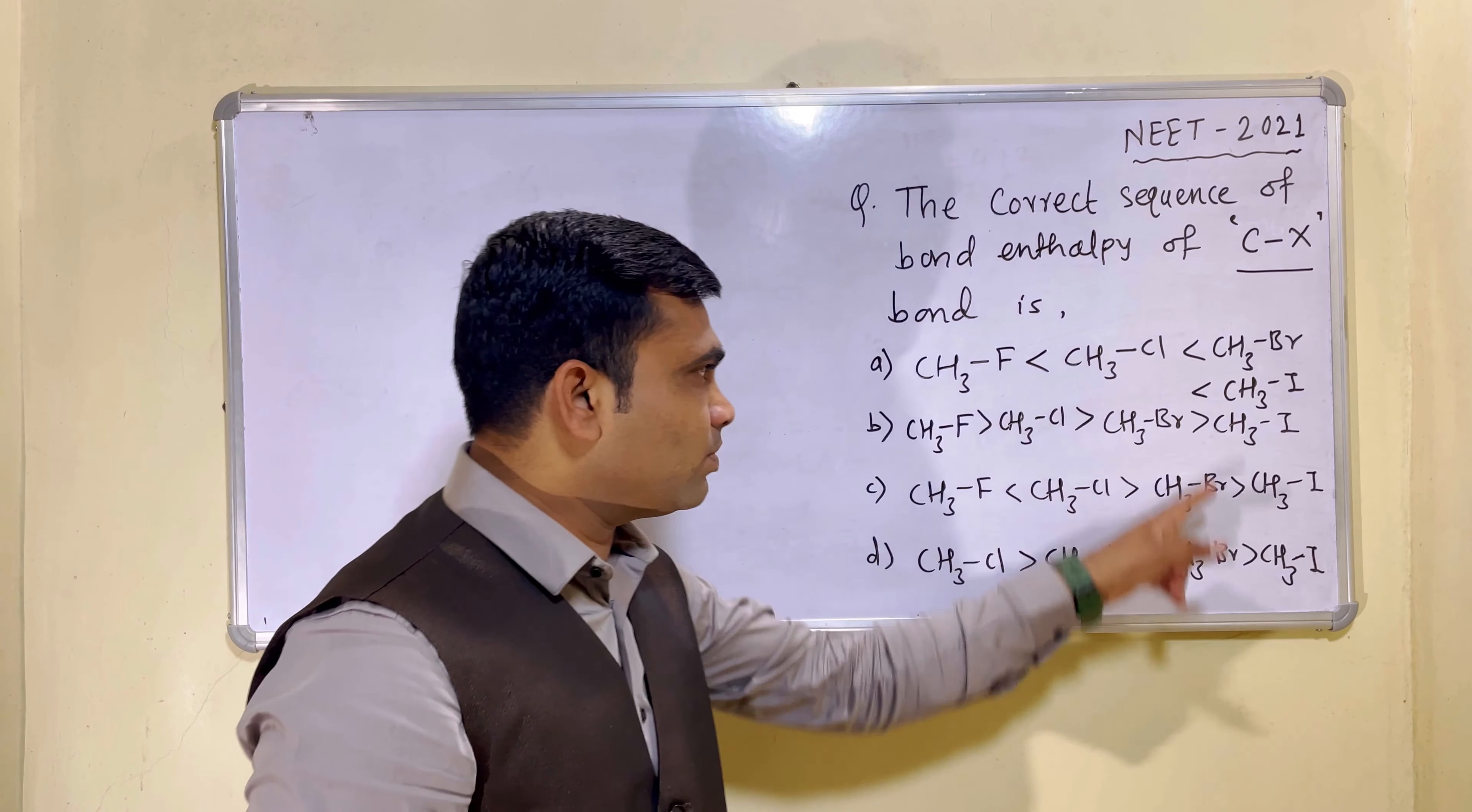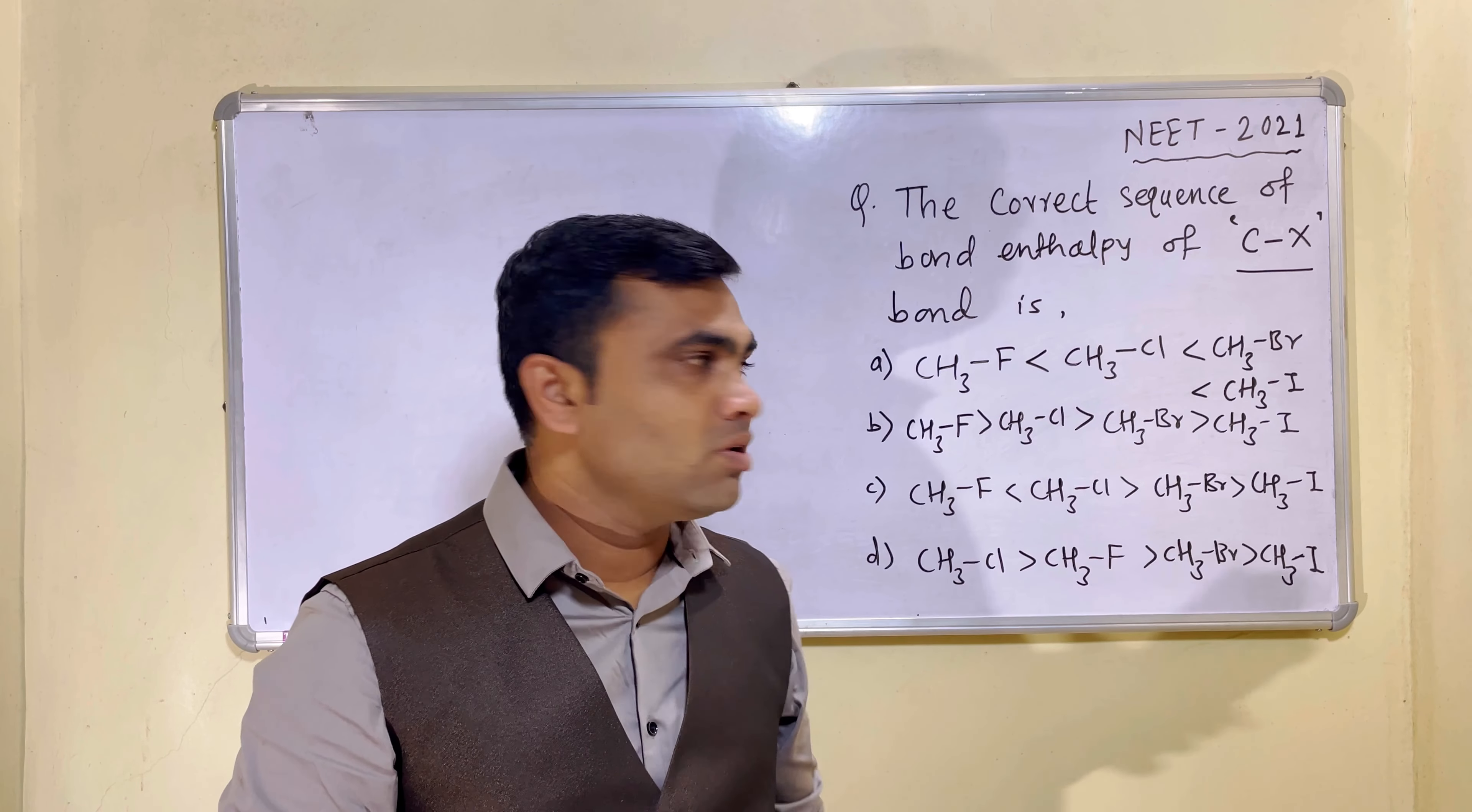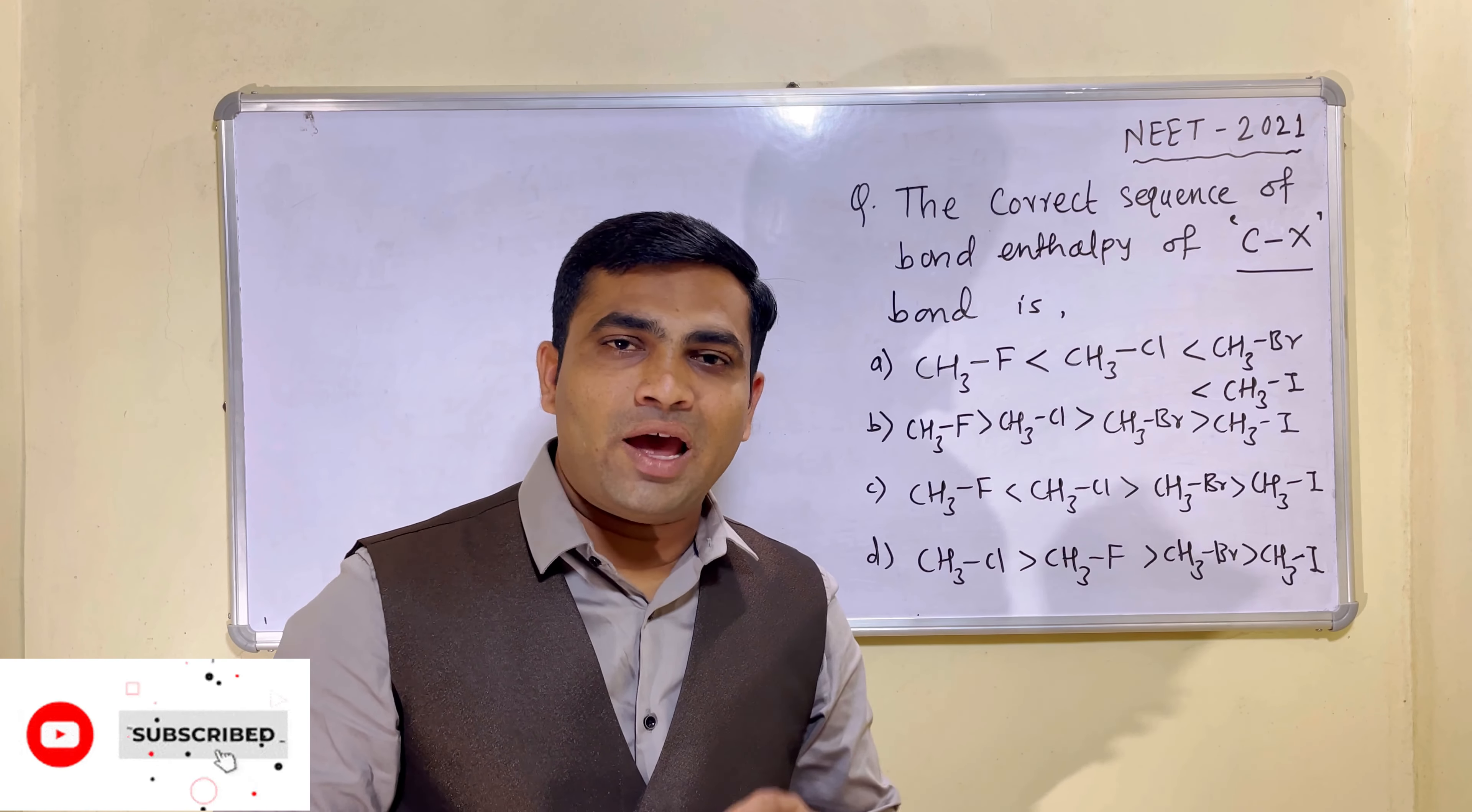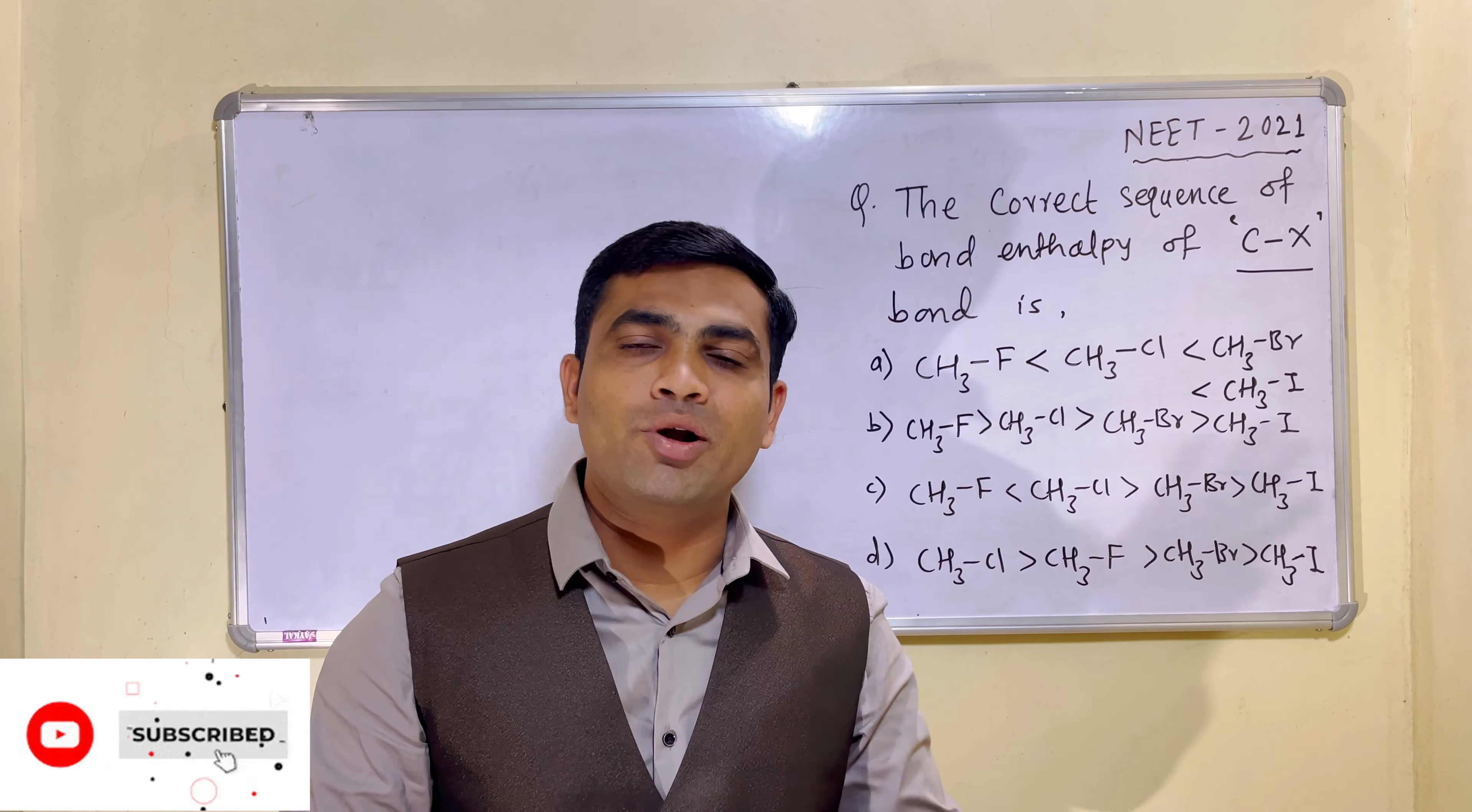Now, in all these examples, one atom is kept fixed. That is carbon. So whatever the size of carbon, it is fixed for all four. Like all four halogens, like fluorine, chlorine, bromine, iodine. Now, only the size of halogen is going to decide now which bond is to be a stronger bond. And depending on that, we will decide the bond enthalpy.